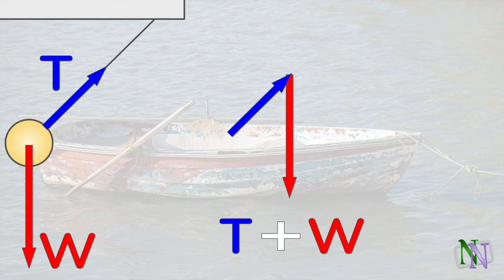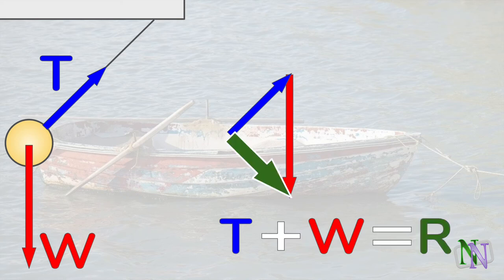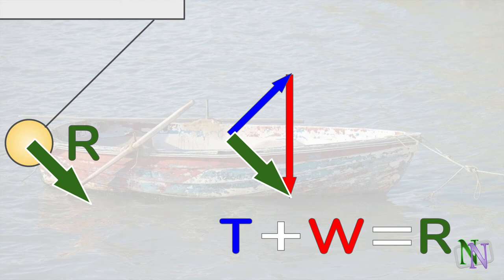Here is force T drawn with correct size and direction. Now W is drawn with its tail touching the nose of T. The resultant force, which would have the same effect as T and W combined, is R, and is drawn from the beginning of T and joins the end of W. So instead of forces T and W on the ball, we would achieve the same effect by replacing them with force R.